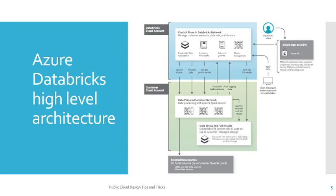Now the data plane. The data plane is the space which can be created over a customer network, which processes data with an Apache Spark cluster behind the scenes. With the data plane, you can realize your data, store your data, and process your data. The control plane always interacts with the data plane through various mechanisms.